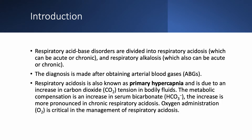Respiratory acid-base disorders can be either respiratory acidosis or respiratory alkalosis, and either one can be acute or chronic. We can only make a diagnosis of an acid-base disorder by obtaining arterial blood gases. In respiratory acidosis, we have primary hypercapnia — CO2 retention — meaning an increase in carbon dioxide tension in bodily fluids. The metabolic compensation is an increase in serum bicarbonate. PaCO2 will go up, and serum bicarbonate will go up. This increase in serum bicarbonate is more noticeable in chronic respiratory acidosis. Treatment depends on the cause, but it is critical to supply the patient with adequate oxygen.